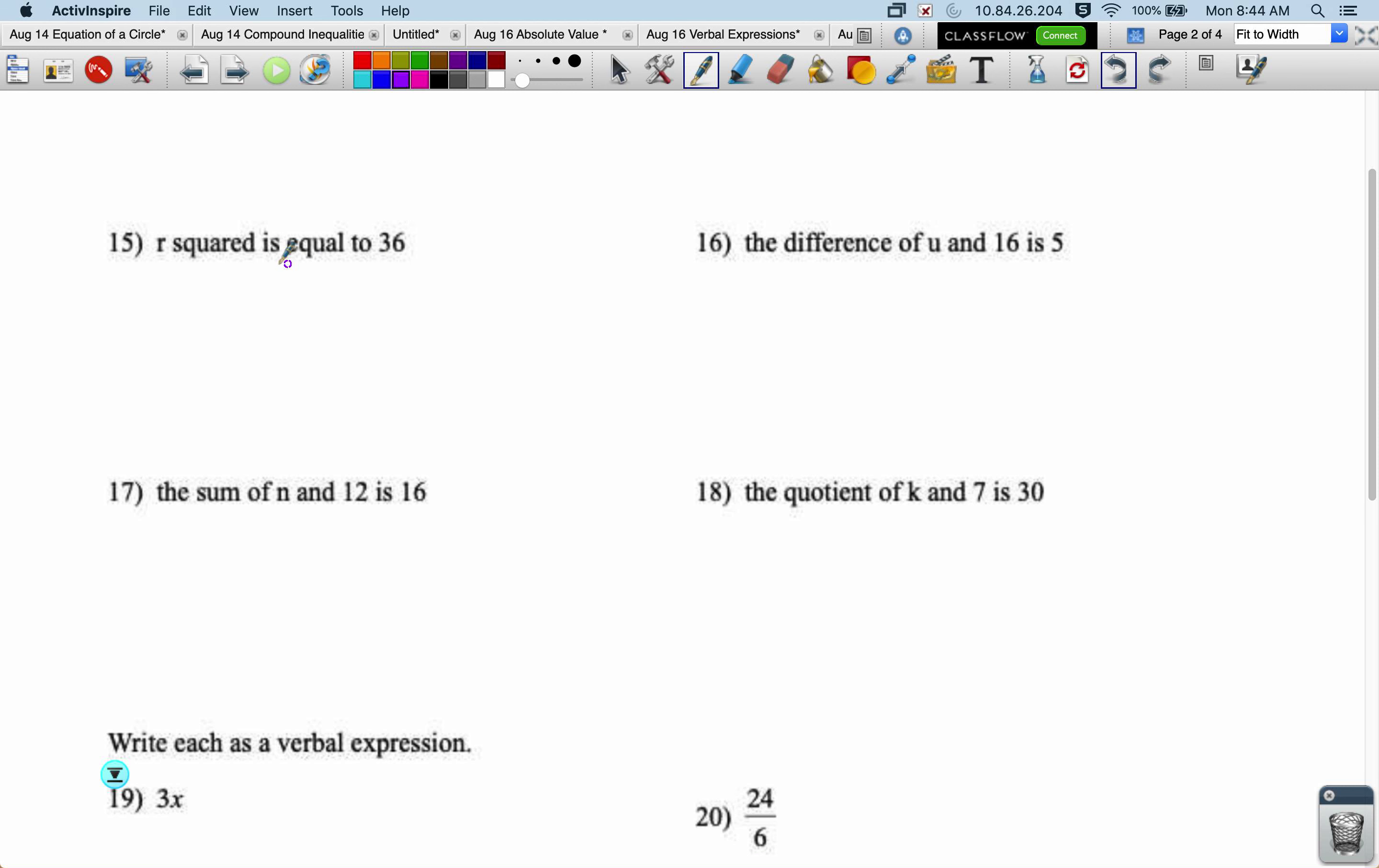Here we've got some that have is equal to. So r squared, we know that squared is our word to put a 2 in the exponent. Is equal to, so we put an equal sign, 36. So it can either be is equal to, or just the word is represents an equal sign.